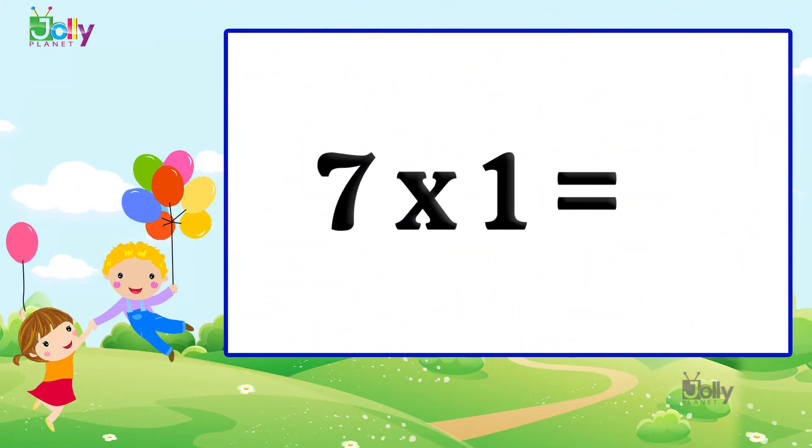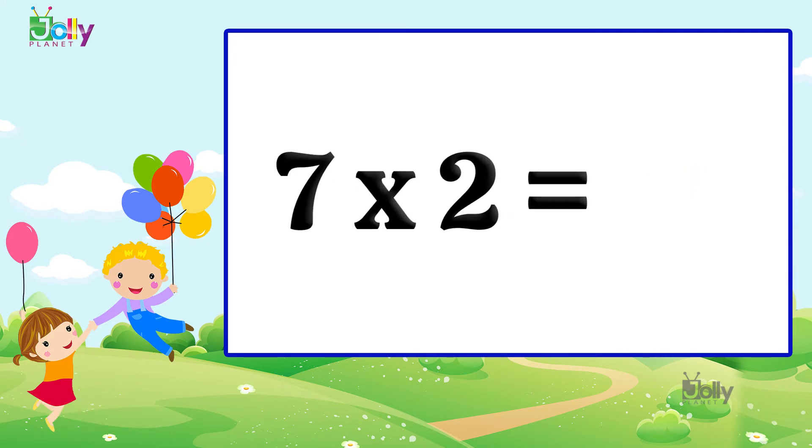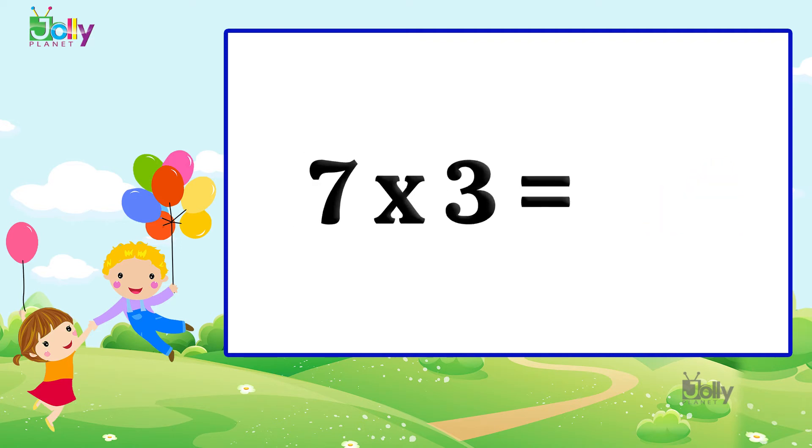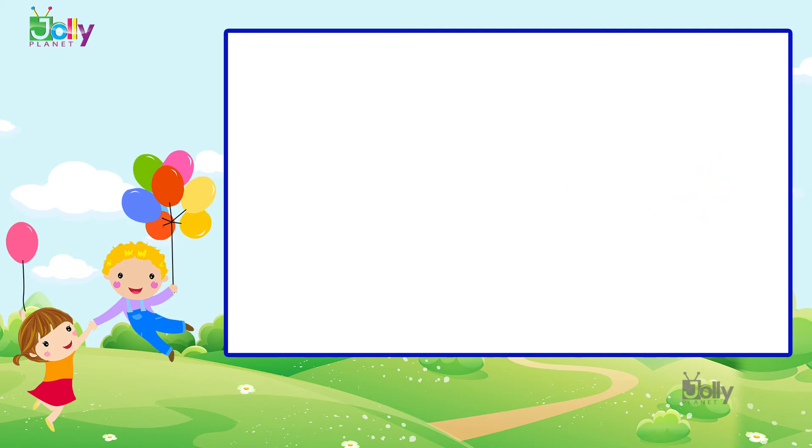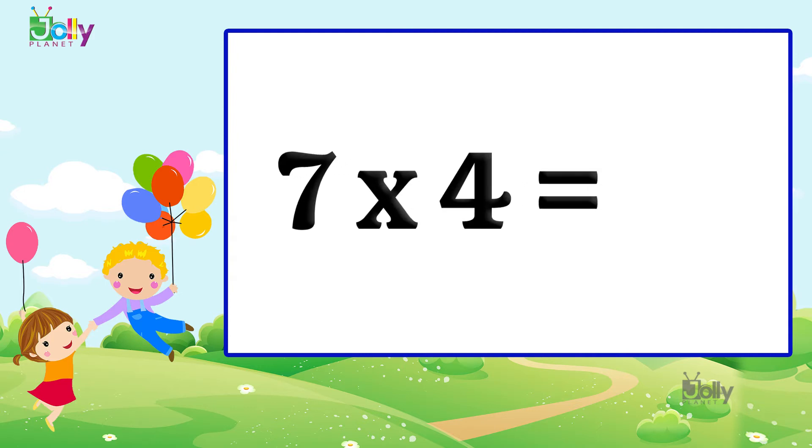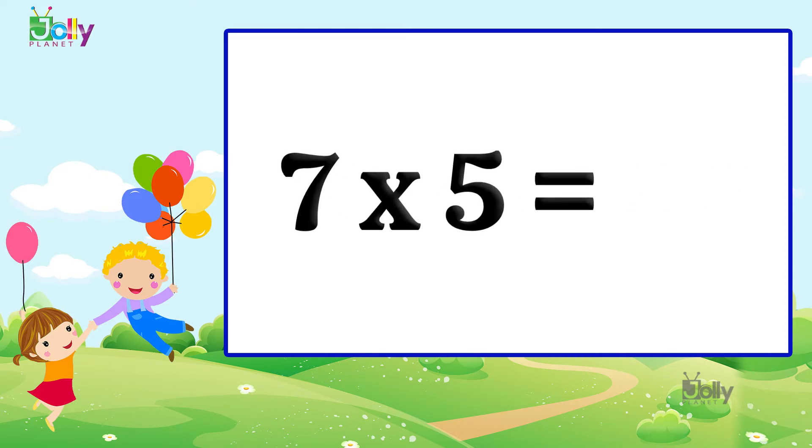Seven ones are seven. Seven twos are 14. Seven threes are 21. Seven fours are 28. Seven fives are 35.